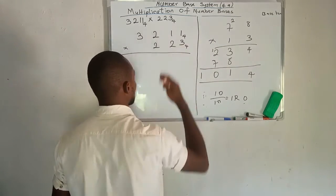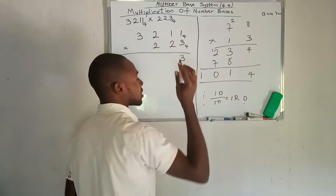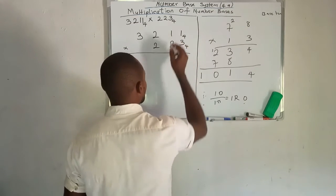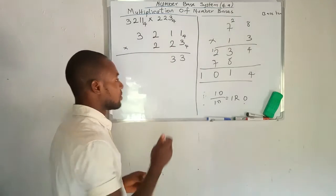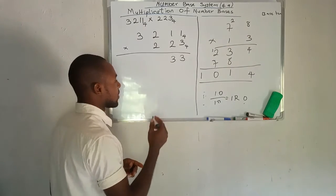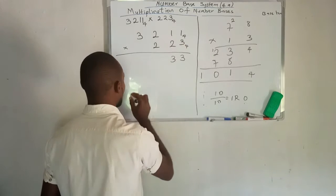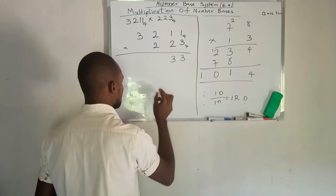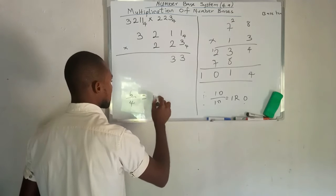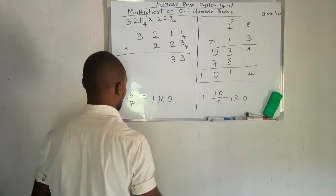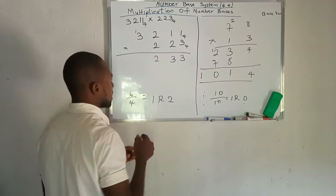So let's use the same method to do the base 4 multiplication. We have 3 times 1, which is 3. Because 3 is less than 4, we can write it down directly. Then 3 times 2 is 6, and 6 is bigger than the numbers in base 4, which are 0, 1, 2, and 3. So 6 divided by 4 gives 1 remainder 2. We write 2 here and take 1 to the next number.